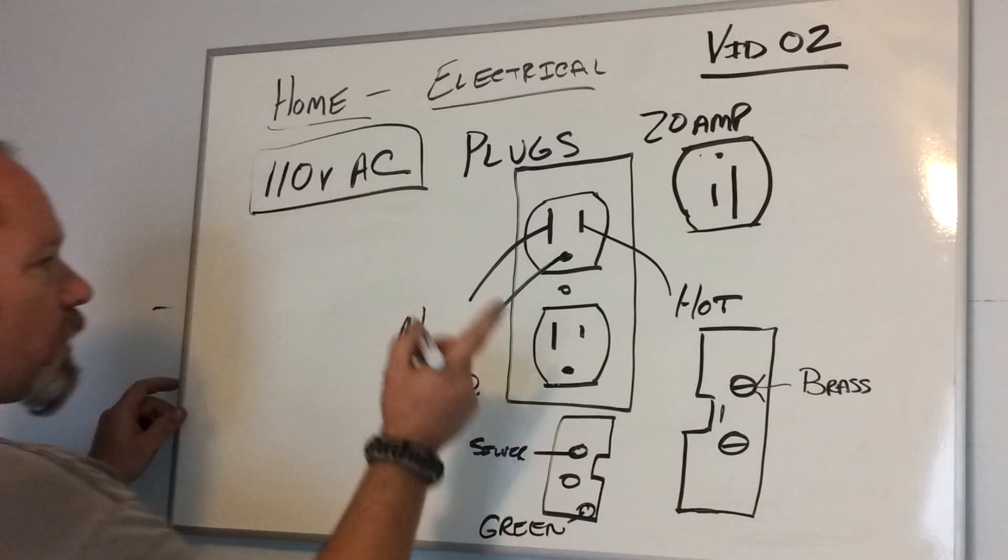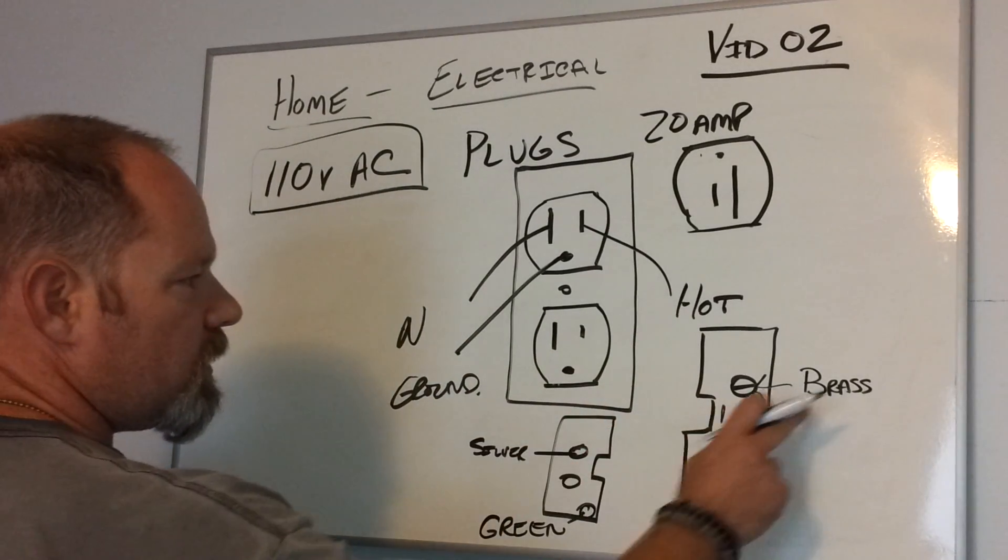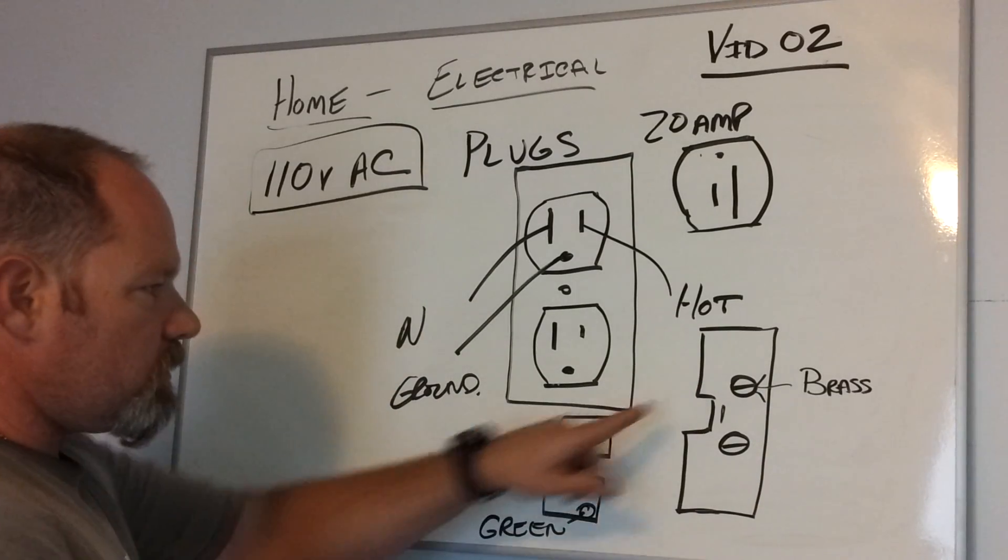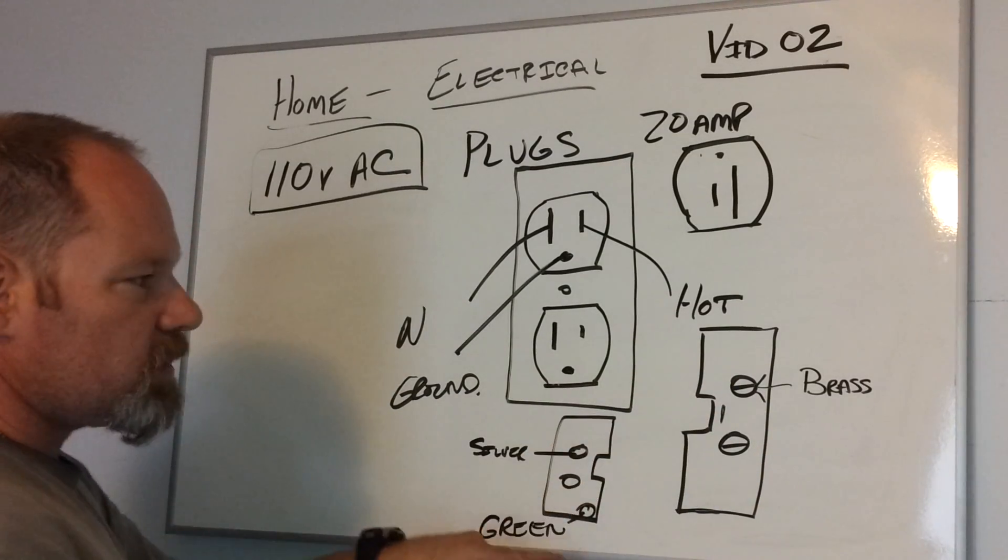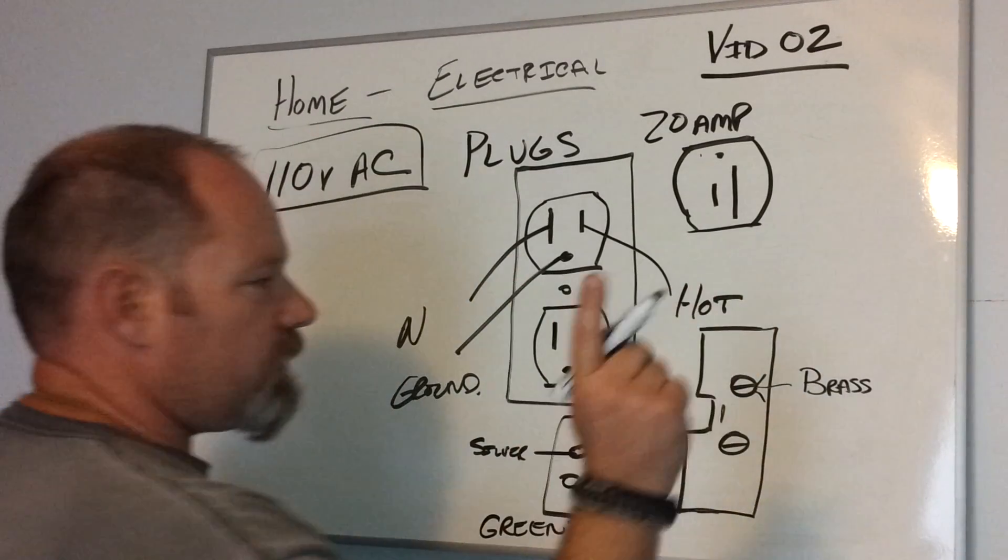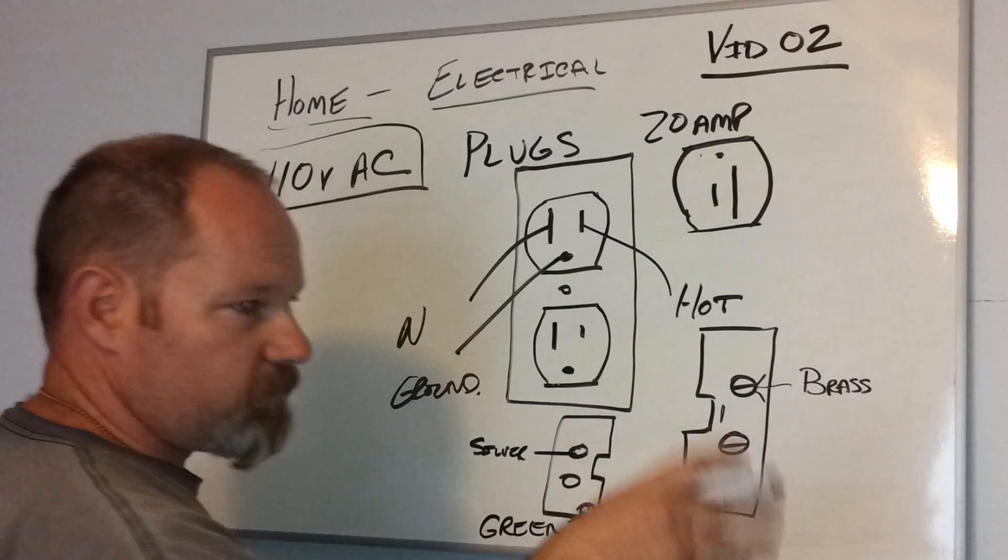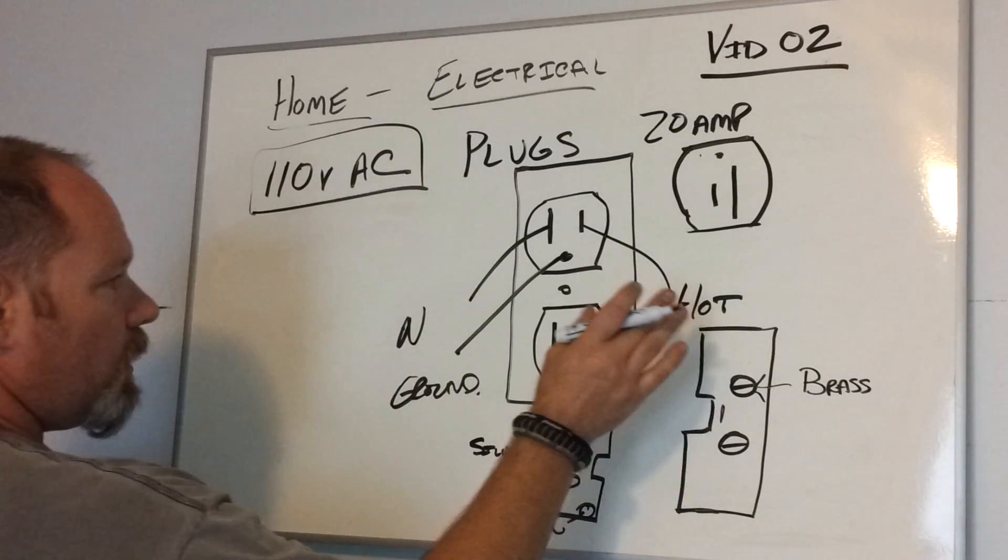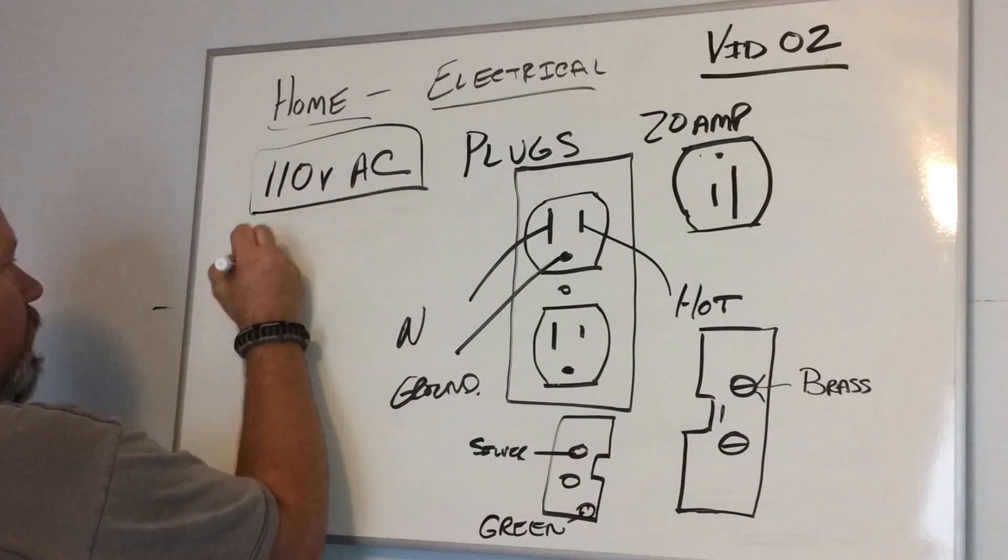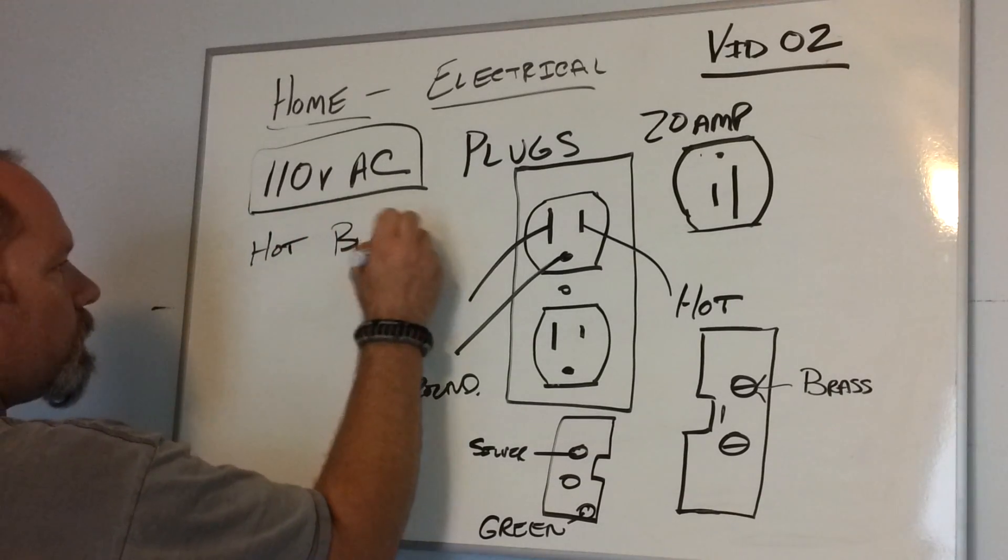So the color coding for hot, neutral, and ground on all of these: on the plugs, the screws are brass. Here's a way to remember—I'll give you this little learning thing in a second. The hot wire is black.